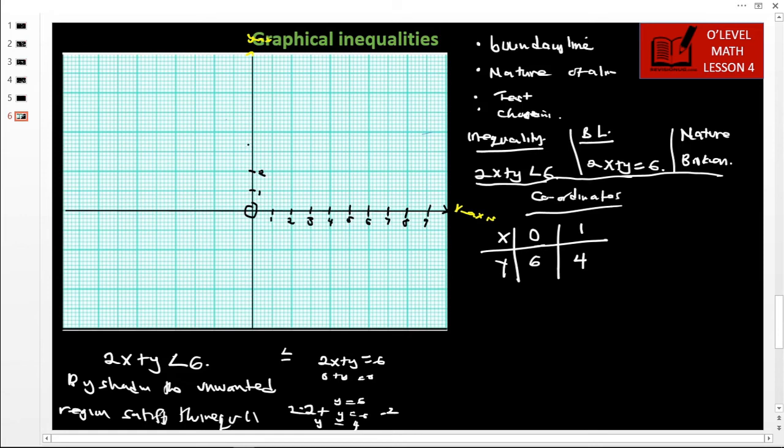This is 1, we have 2, there is 3, 4, then 5, then 6, 7. Then here we have negative 1, negative 2, and negative 3. Now we are going to plot these points. We plot 0 and 6, so our point is here at 0 and 6.